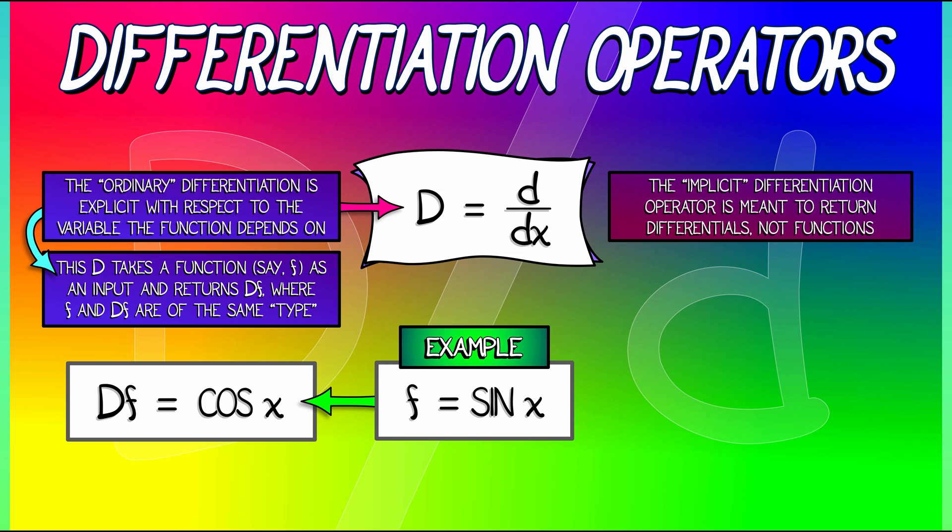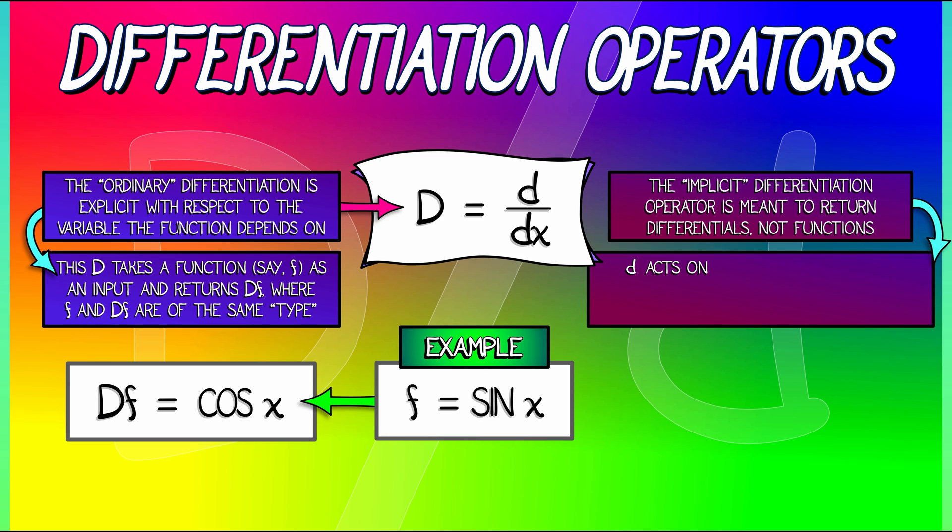This implicit differentiation, lowercase d, acts on a function f, a function that might depend on more than one variable. And it returns a differential, df, that is not of the same type as f.